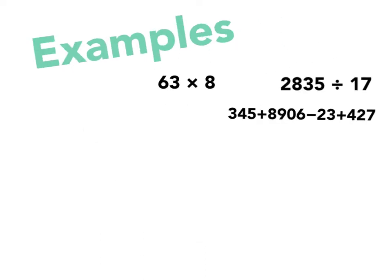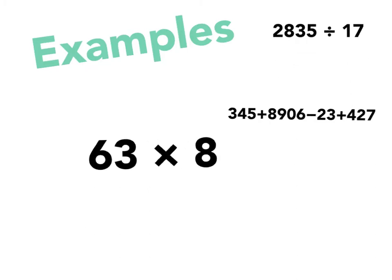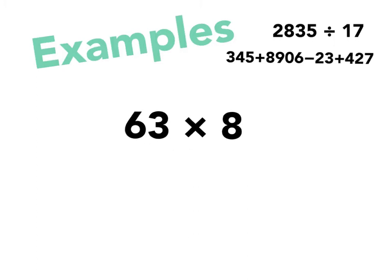Cool, so the first example is 63 multiplied by 8. Now, 63 × 8 is a little tricky to do in my head. So I round my numbers to the first digit. I round 63 to the nearest whole digit.